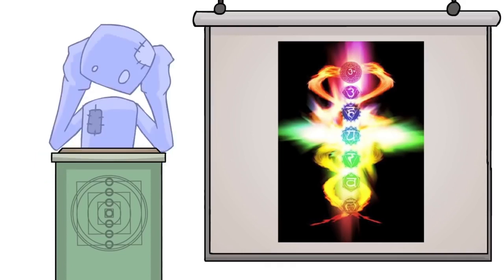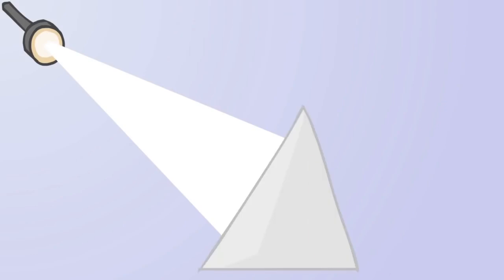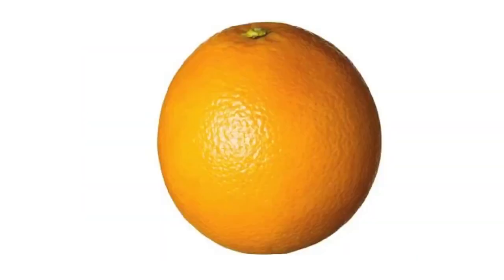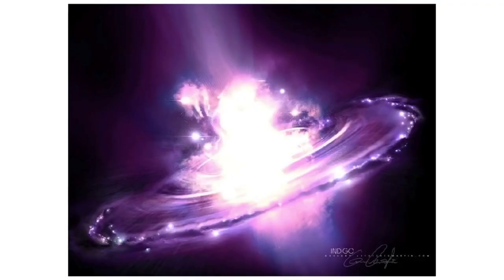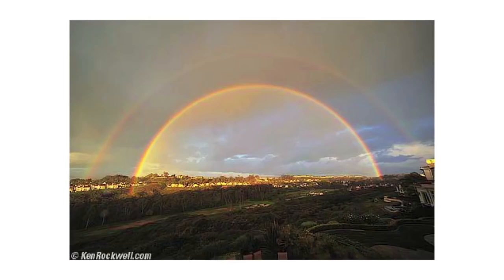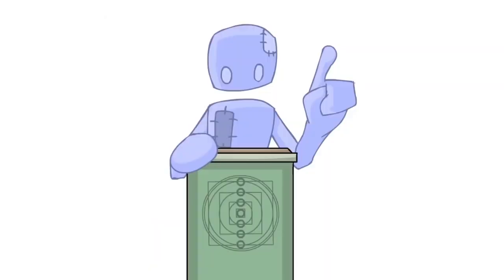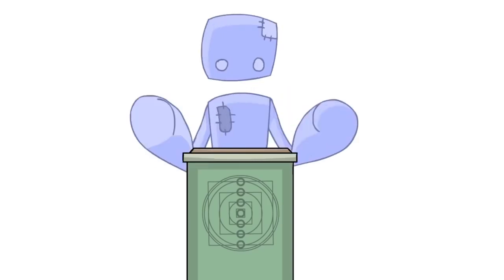Now, for us to even start to understand chakras, first we have to understand the basics of light and color. If you take pure light and shine it through a prism, the light will break into a spectrum of seven colors. Red, orange, yellow, green, blue, indigo, and violet. We familiarly recognize this as the spectrum of the rainbow, or even more familiar, the basic palette in Photoshop.